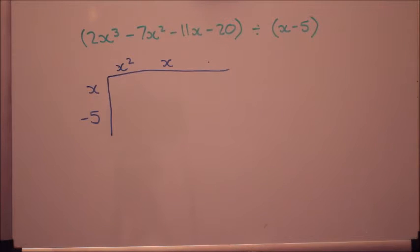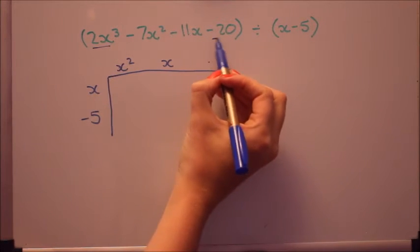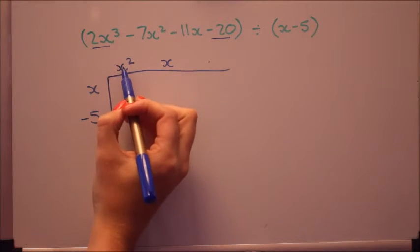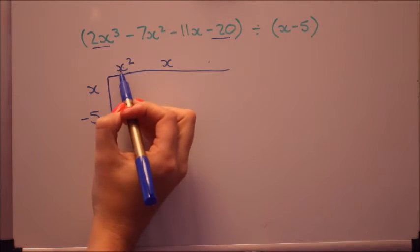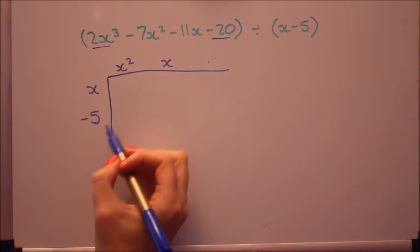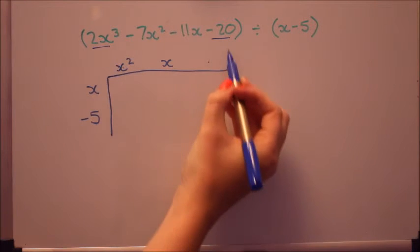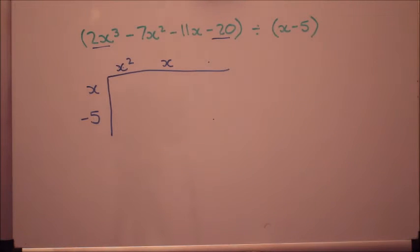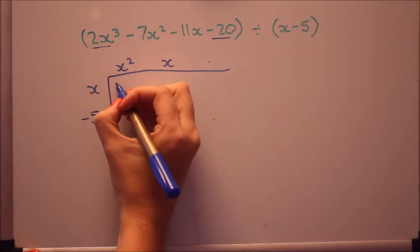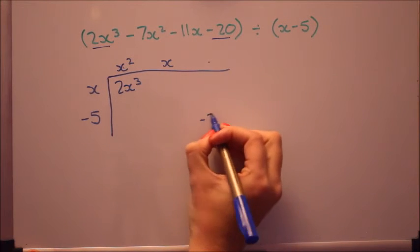And the two terms that only come up once are the very first term and the very last term. Only these two terms here multiply to give that term. There's no other x cubed from anywhere. And only the minus 5 and the number multiply to give this number at the end here. There's no other terms that will just give a number. So we can fill those ones in. That's got to be 2x cubed and that one's got to be minus 20.